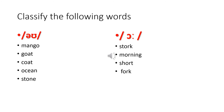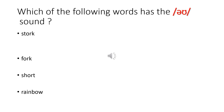Classify the following words: O sound — mango, goat, coat, ocean, stone. O sound — stork, morning, short, fork. Which of the following words has the OO sound? Stork, fork, short, rainbow.